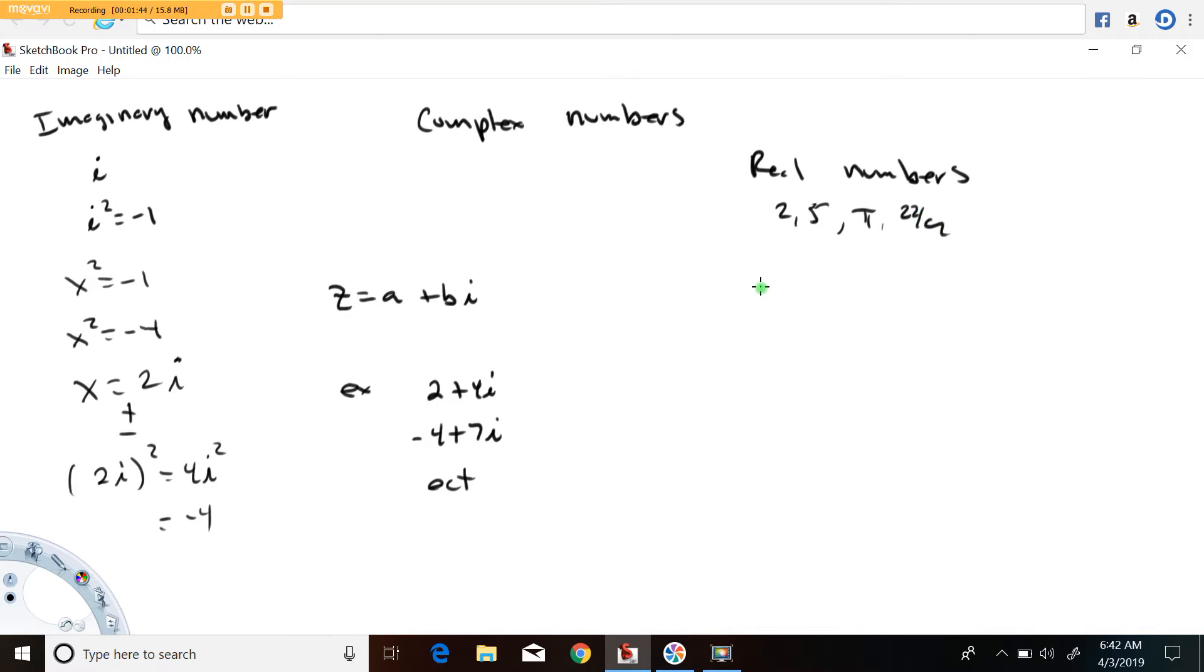And then you have imaginary numbers, which would be like 2i, 5i, negative 3i, etc.